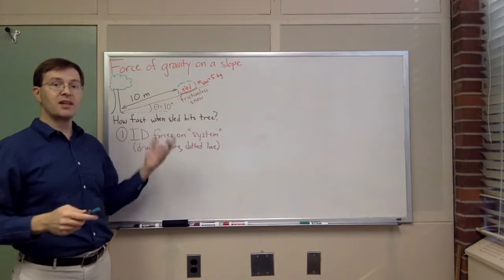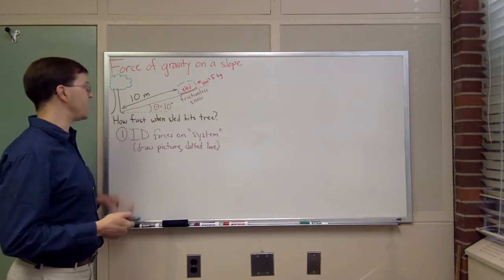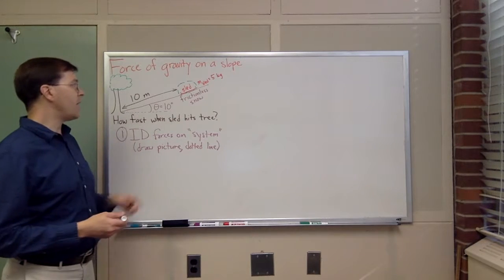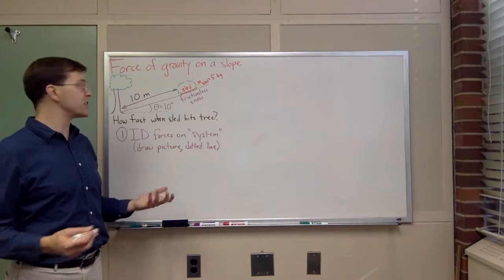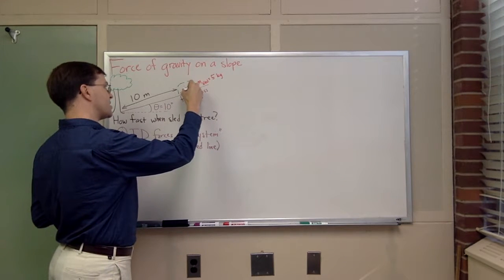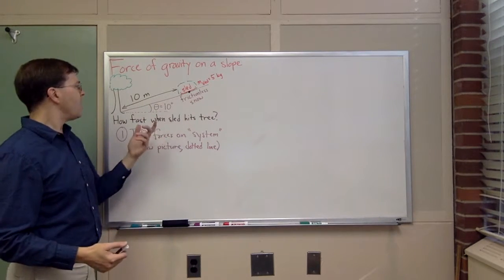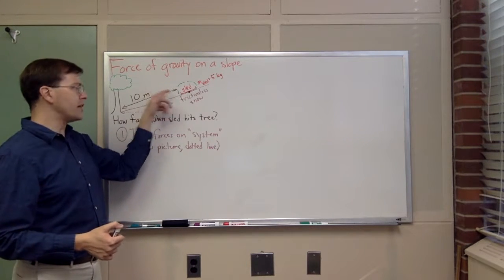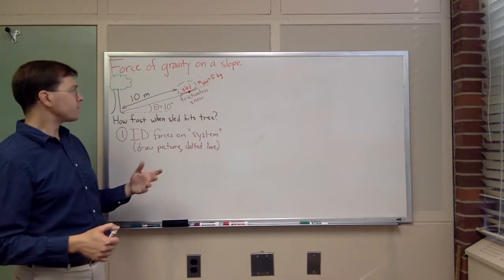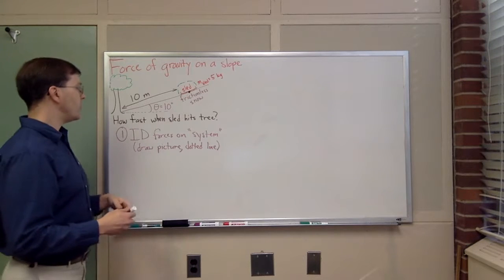I've drawn that dotted line, so I've now separated the sled from everything else in the universe. That's my choice of system, and the dotted line helps me visualize that. Once I've done that, to identify the forces I can be very systematic: I look at every place where the outside world touches the system. There's a contact surface between the sled and the snow. I'll draw a single dot for that contact point.